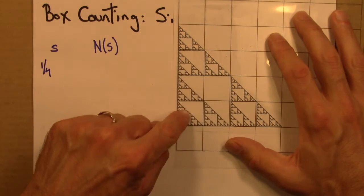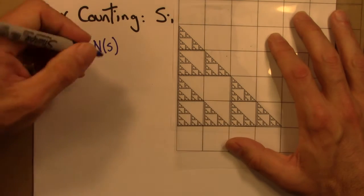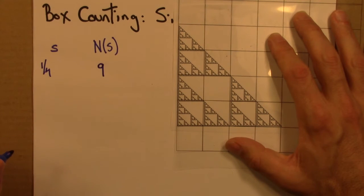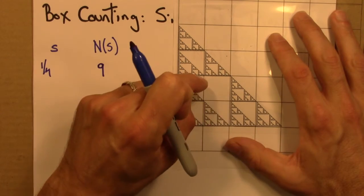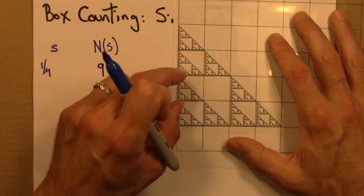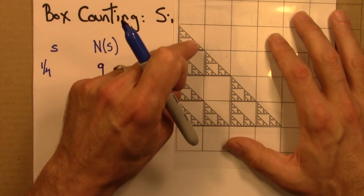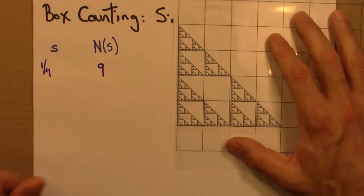Let's see what we have: 1, 2, 3, 4, 5, 6, 7, 8, 9. So N(s) is 9. In particular, note that I don't need to count this one. None of the shape is in this box. So I can completely cover the shape, the Sierpinski triangle, with these 9 boxes.